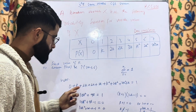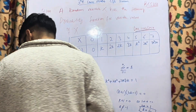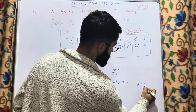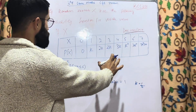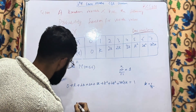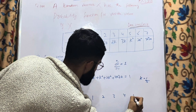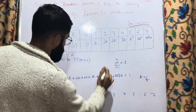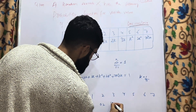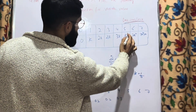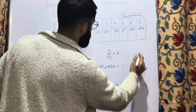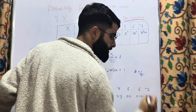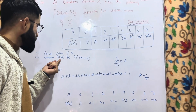Now we evaluate the probabilities. Substituting k = 1/10 into the table: P(X=0) = 0, P(X=1) = k = 0.1, P(X=2) = 2k = 0.2, P(X=3) = 2k = 0.2, P(X=4) = 3k = 0.3, P(X=5) = k² = 0.01, P(X=6) = 2k² = 0.02, P(X=7) = 7k² + k = 0.17.